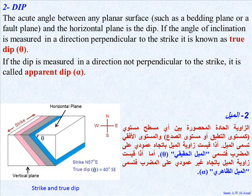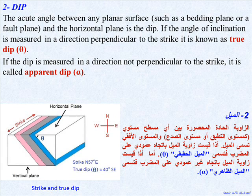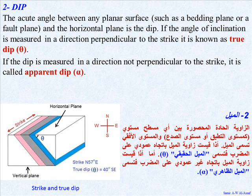2. Dip — the acute angle between any planar surface, such as a bedding plane or a fault plane, and the horizontal plane is the dip. If the angle of inclination is measured in a direction perpendicular to the strike, it is known as true dip. If the dip is measured in a direction not perpendicular to the strike, it is called apparent dip.